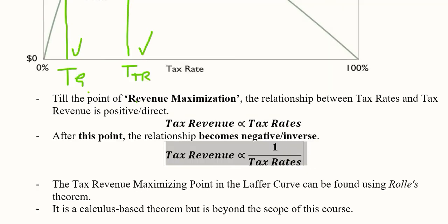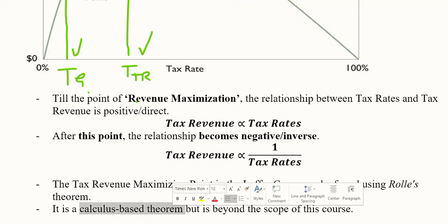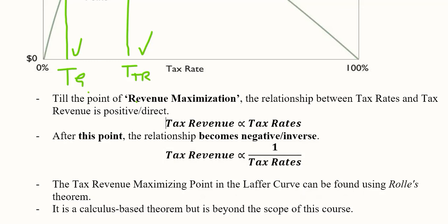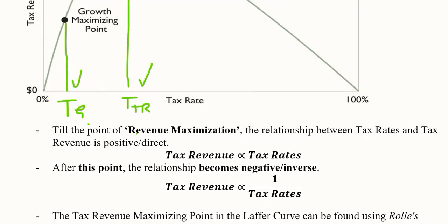The mathematics behind it can be understood with the help of Rolle's theorem, which is not a part of our course at this stage. But we can use this to find out the tax revenue maximizing point on the Laffer Curve. It is basically a calculus-based theorem that we can understand at a different level.